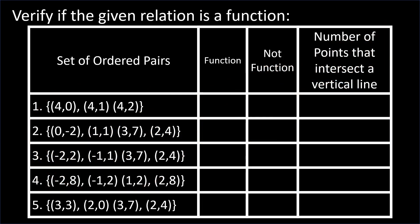Let us now verify if the given relation is a function or not. Here are the set of ordered pairs: (4,0), (4,1), and (4,2). The abscissas for number 1 are 4, 4, and 4. The three ordered pairs have a common abscissa. Therefore, it is not a function.